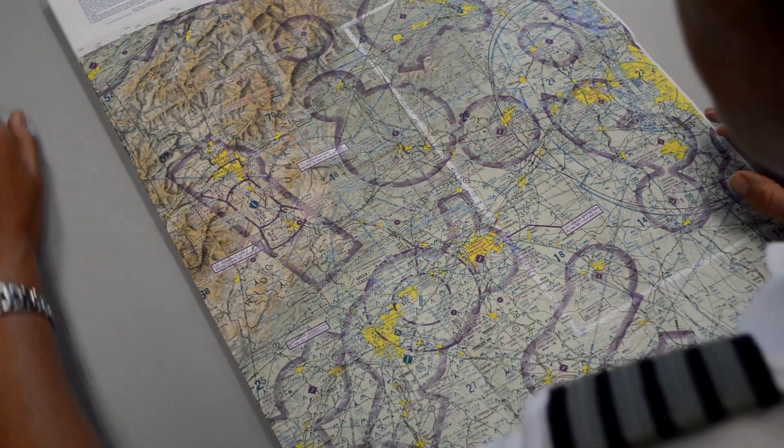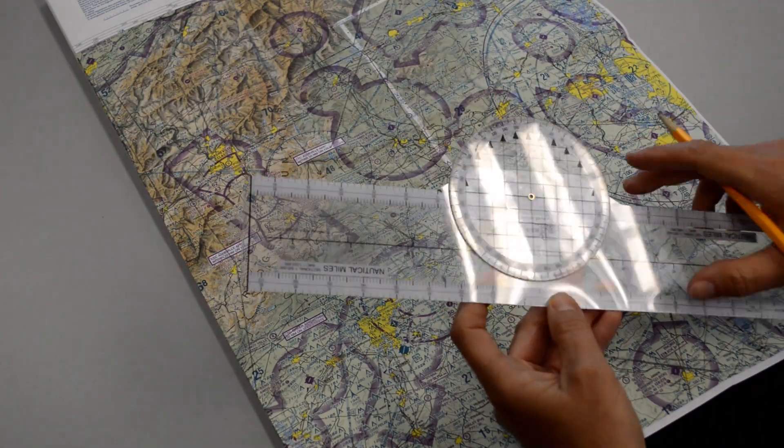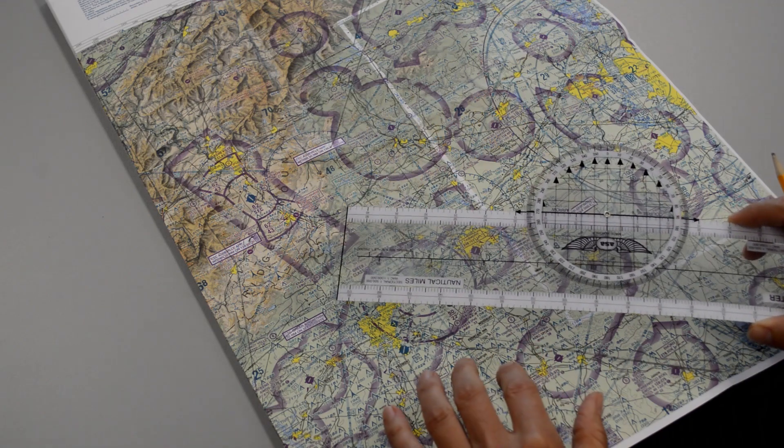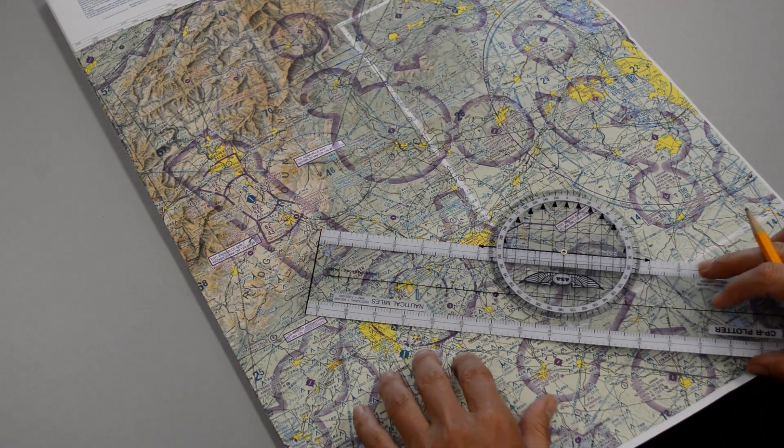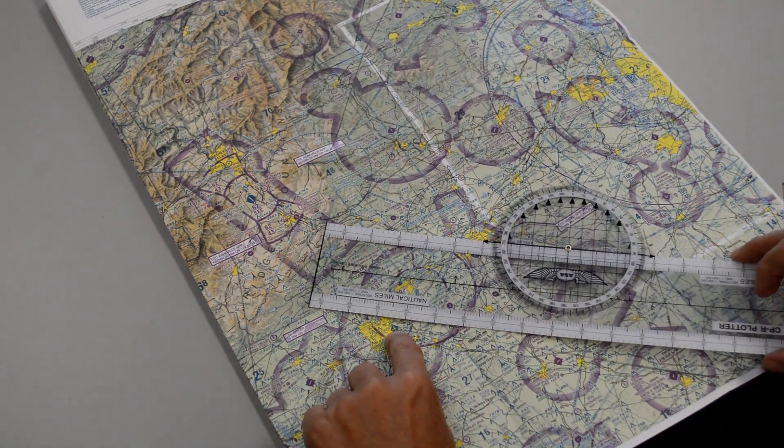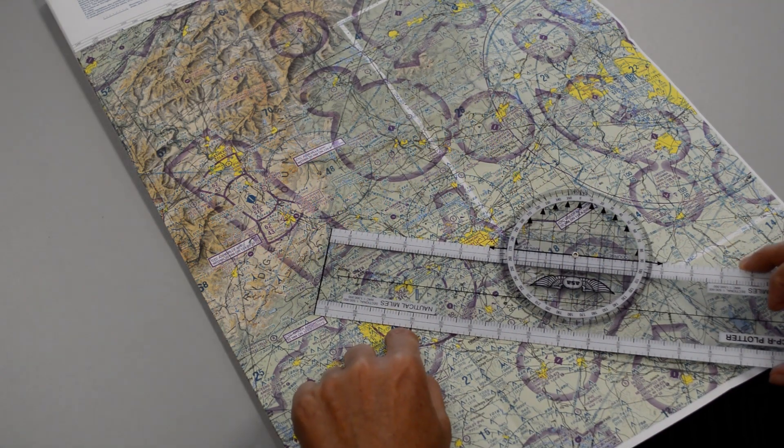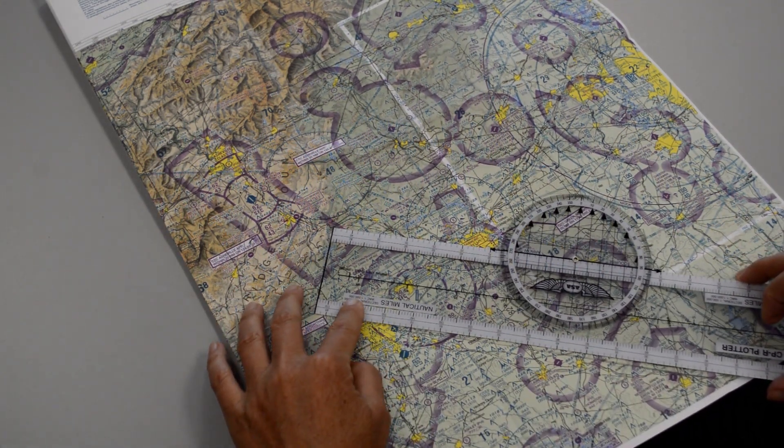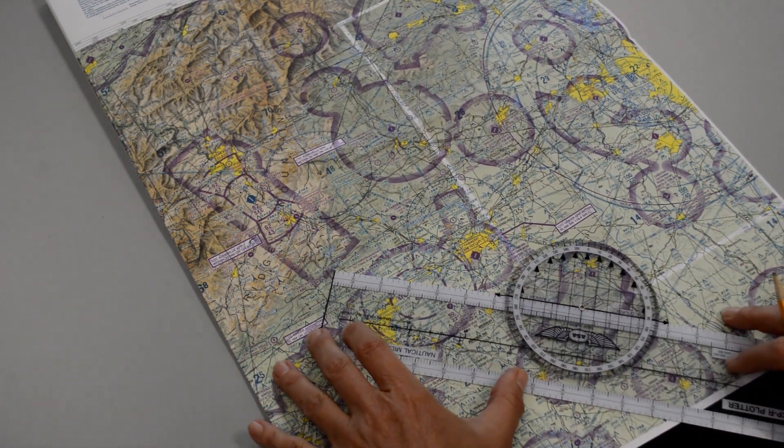We need our plotter. This one is called the ultimate plotter and it makes it a little bit easier. I'll demonstrate how to find your true course with the plotter that's a little bit older style. All we need to do is place a portion of the ruler, a straight line on the line we drew. It doesn't matter where I place the plotter. We can put it right here in the middle if we want to.